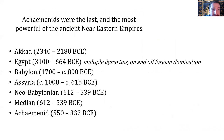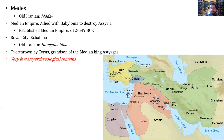Looking then to the Achaemenids — they were truly the first world empire. At their height, they controlled from Egypt and Greece in the west to Central Asia and India in the east. They were the most powerful empire to control this area, and really one of those major shakers and changers of the world because of what they accomplished.